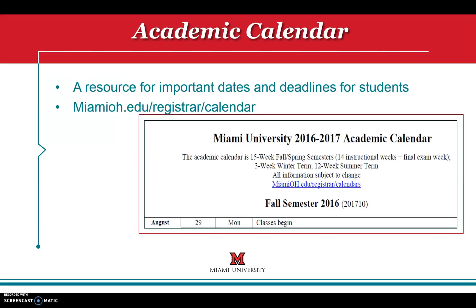The Academic Calendar is a calendar that notes important dates and deadlines. It shows when classes start and end, and also notes vacations or breaks during the academic year. Note that the dates on the Academic Calendar change each semester, and it also shows the drop deadline and withdrawal deadline for each semester. Go to MiamiOH/registrar/calendars for more information.